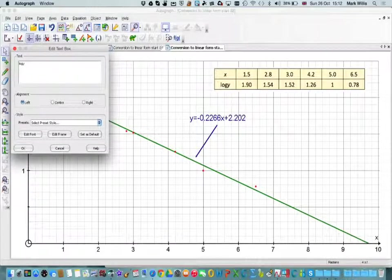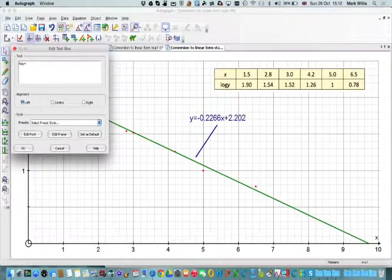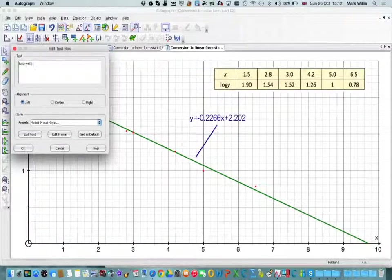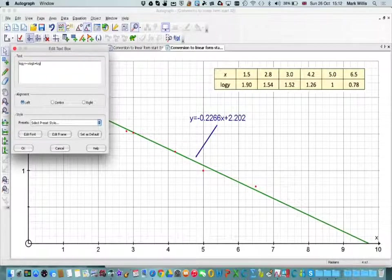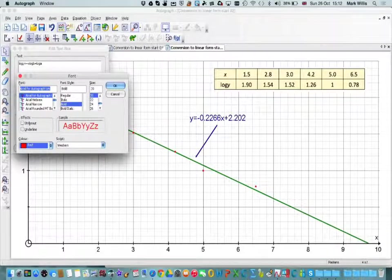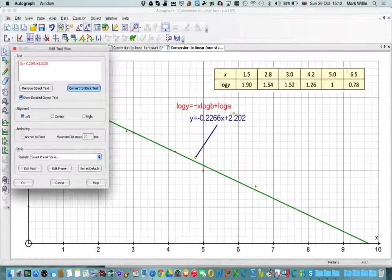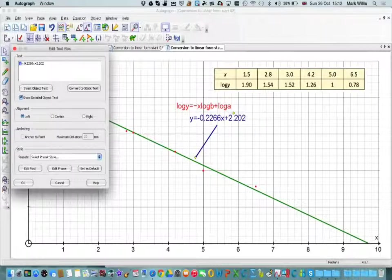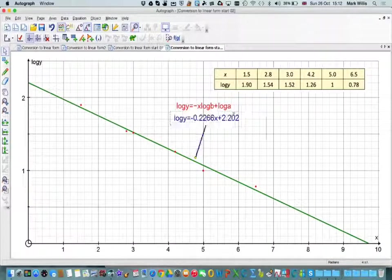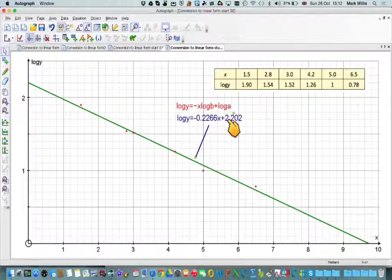Don't forget we're going to compare this with log y equals minus x log b plus log a. I'm just going to change the color of that to red to make it stand out a bit. We'll press OK here and we'll compare that. We'll just change this one thing, convert to static text and just change the y to log y.